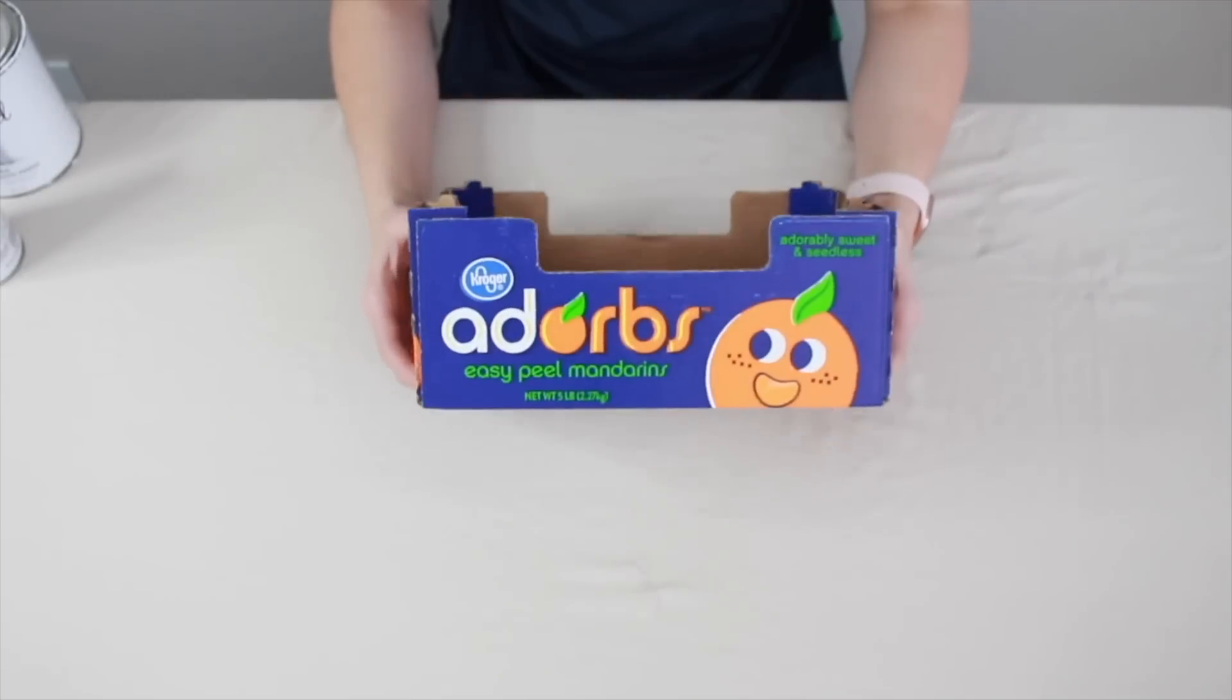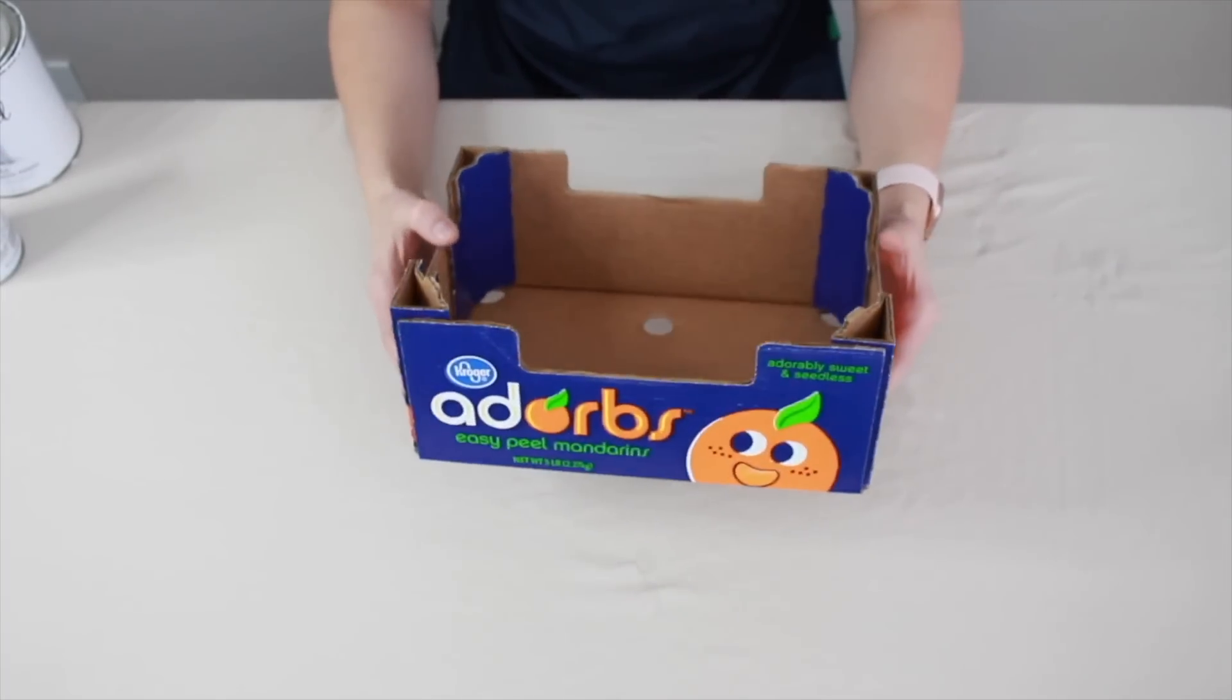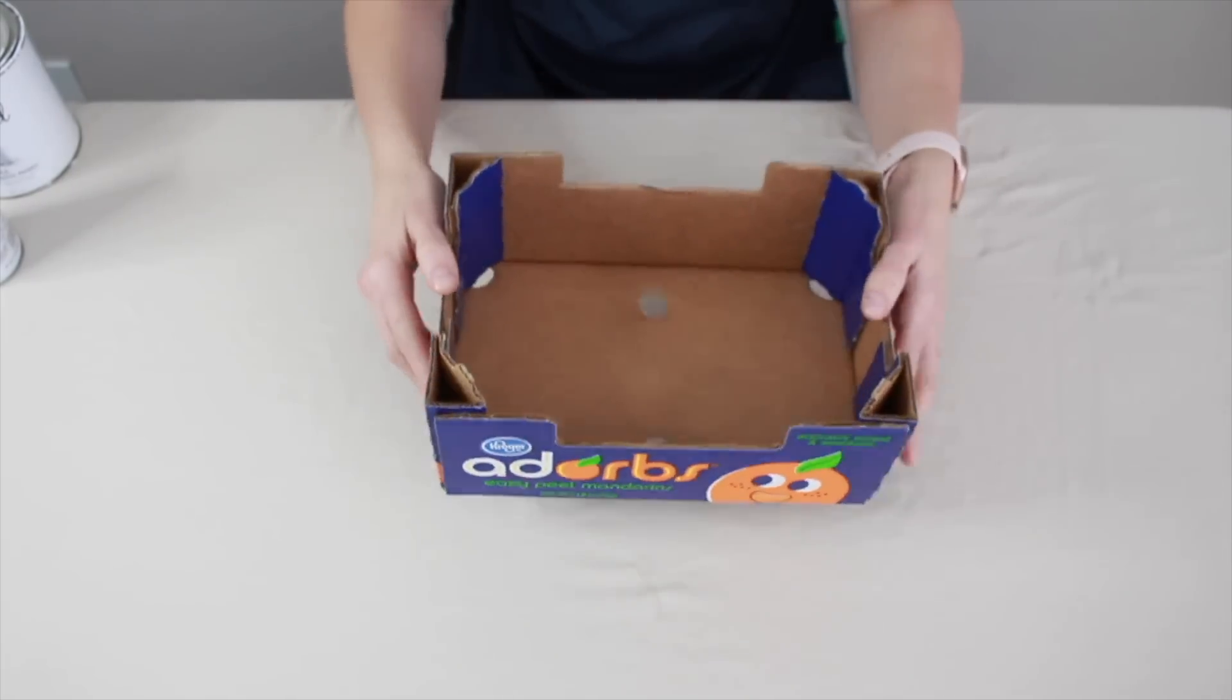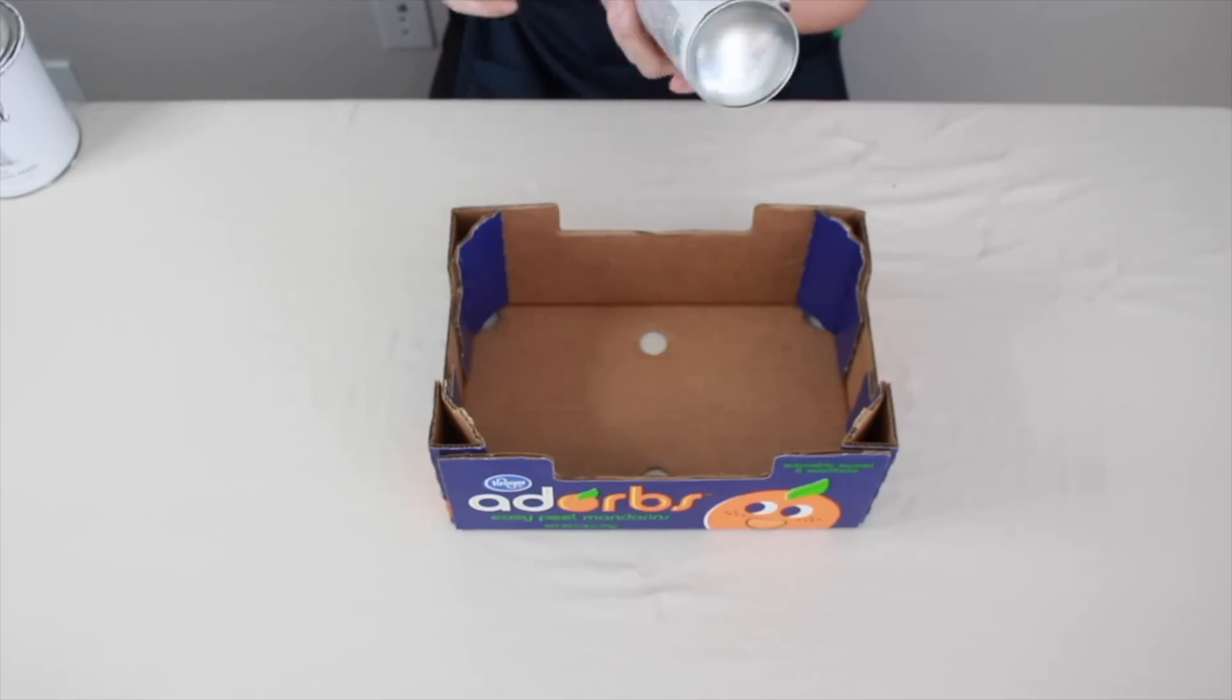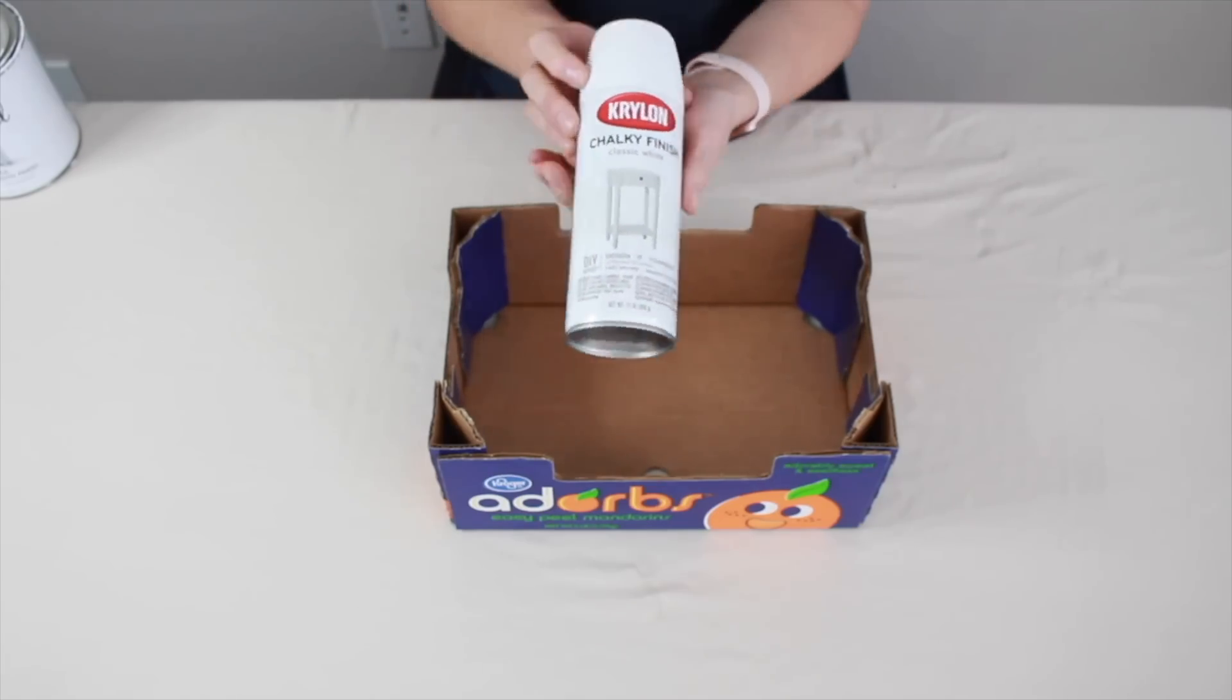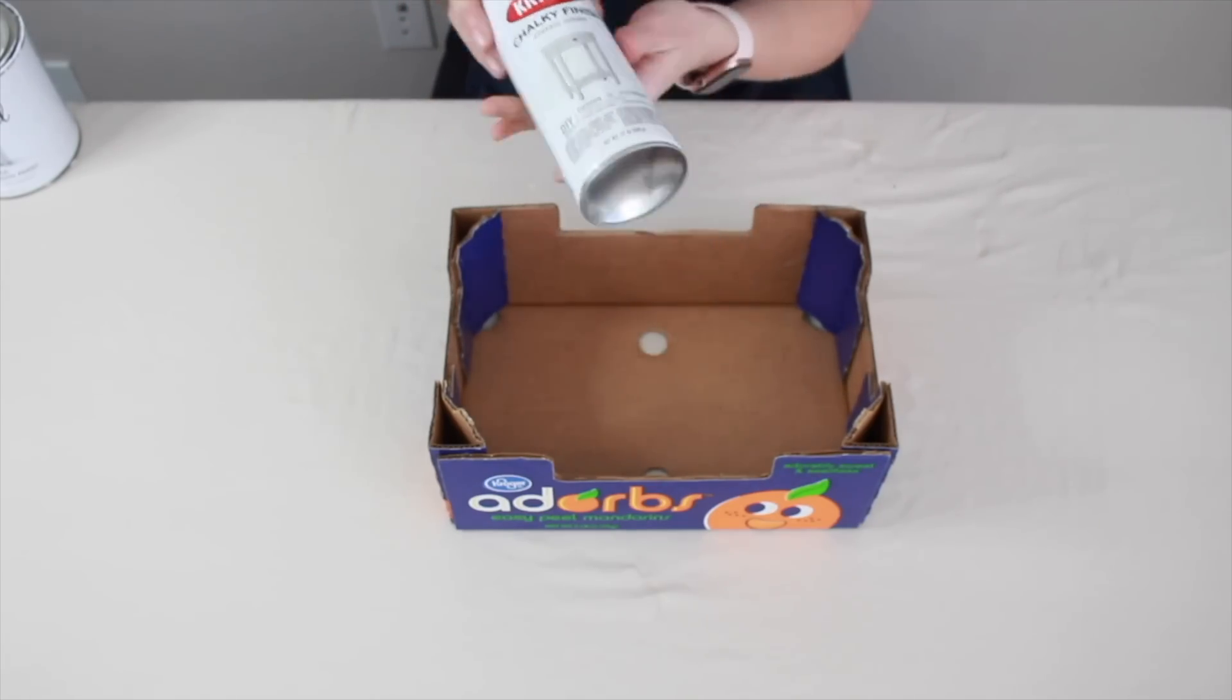Have you ever wondered what to do with a clementine or a mandarin orange box? Typically these end up in recycling bins. We're going to start by painting this entire box with spray paint. So depending on where you live, it is wintertime where I'm at, so spray painting isn't really an option for me. However, this is an option for you if you live in a climate that has warmer weather.